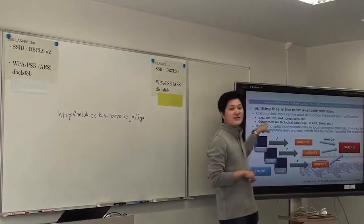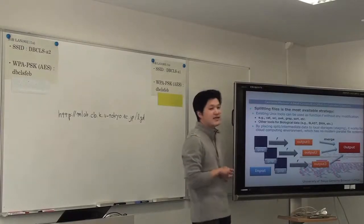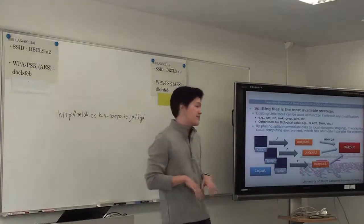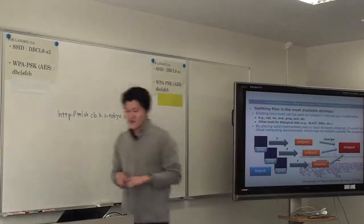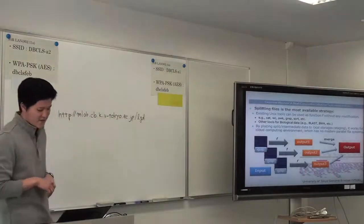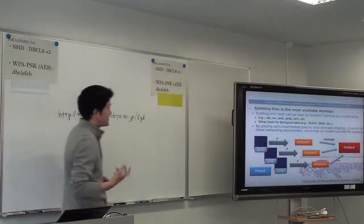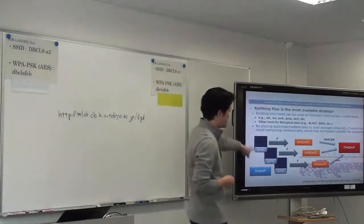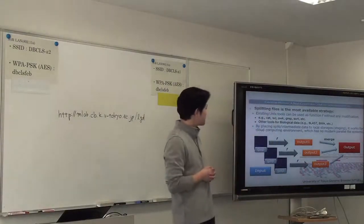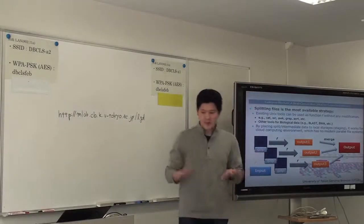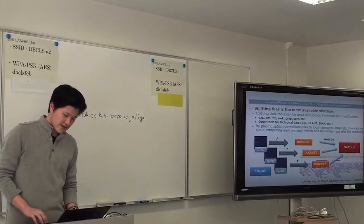Function F can be any Unix command, and other tools for processing files can also be used as function F. Even without modern parallel file systems, you can make efficient disk workflows by spreading inputs across local storage on multiple hardware nodes, multiplying the number of disk heads to handle concurrent data accesses.